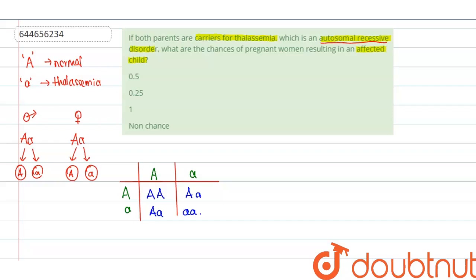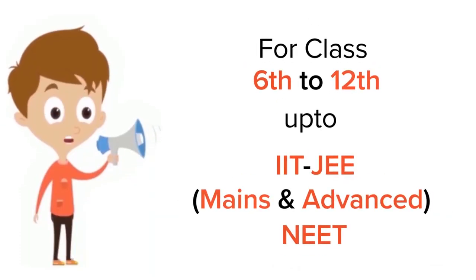Only the genotype aa will result in thalassemia, because thalassemia is an autosomal recessive disorder requiring both recessive alleles to be present. There are 4 possible offspring, and only 1 has genotype aa, so the chance of an affected child is 1 divided by 4, which equals 0.25. Therefore, the second option — 0.25 — is the correct answer.